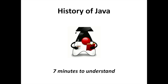Before Java emerged as a programming language, C++ was the dominant player in the trade. The primary goal of the creators of Java was to create a language that could tackle most of the things that C++ offered, while getting rid of some of the more tedious tasks that came with the earlier languages. With Java, they reached their goal. In this video, you are going to discover the history of Java on the feature site in just seven minutes.